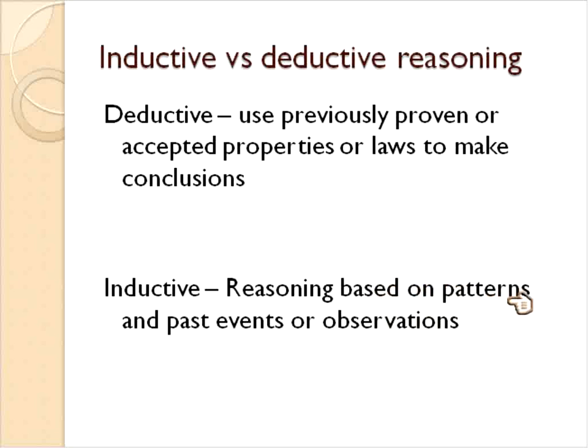Inductive arguments use reasoning based on patterns and past events or observations. An example of this would be if you see people walking out of a hotel and you see one person wearing a white shirt and tie and a suit, and the next person's wearing a white shirt and tie, and the next person's wearing a white shirt and tie. You could make observations based on that pattern and conclude that perhaps there is some kind of meeting going on at this hotel in one of their meeting halls.